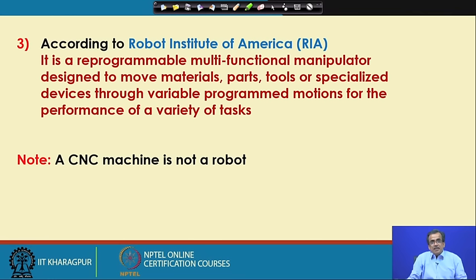The Robot Institute of America defined robot as follows: it is a reprogrammable, multifunctional manipulator designed to move materials, parts, tools, or specialized devices through variable programmed motions for the performance of a variety of tasks. By manipulator, we mean a robot with fixed base — that is nothing but a mechanical hand. We are going to model, design, and develop the human hand in the form of an artificial hand, and that is nothing but the manipulator. So it is reprogrammable and multifunctional.